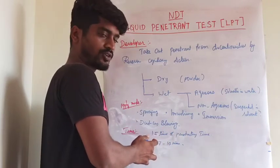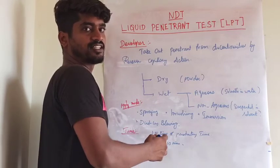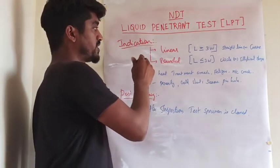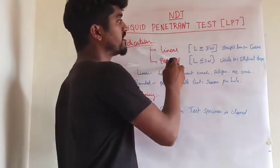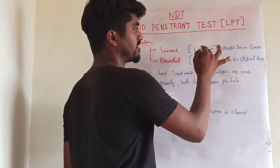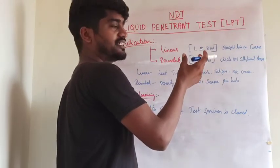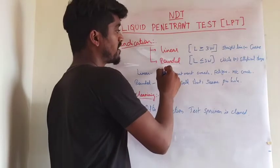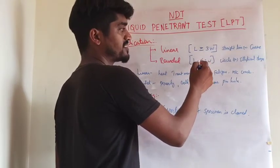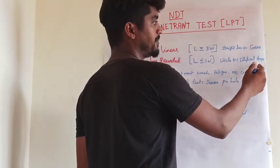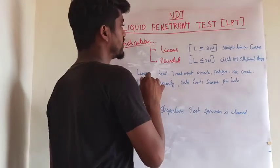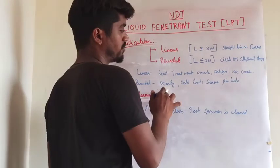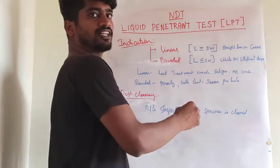We inspect for cracks or defects appearing at the surface of the metal. Indications are classified into two types: linear indication and rounded indication. Linear indication is when the length of the defect is greater than or equal to three times the width — it may be a straight line or curve. Examples include heat treatment crack, fatigue crack, and machine crack. Rounded indication is when the length is less than three times the width, appearing as a circle or ellipse. Examples include porosity, cold shuts, seams, and pinholes.